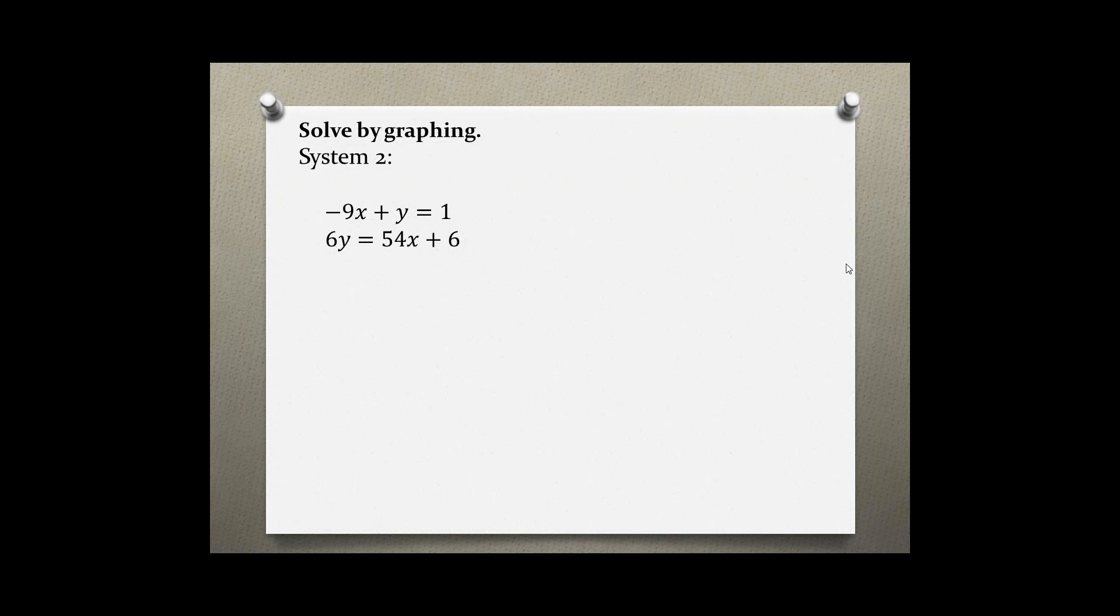Solve by graphing system 2. Negative 9x plus y equals 1 and 6y equals 54x plus 6.